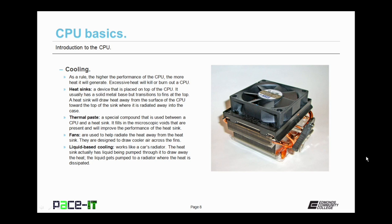To help improve the efficiency of the heat sink, we use thermal paste. It's a special compound that is used between the CPU and the heat sink. It fills in the microscopic voids that are present and will improve the connection between the heat sink and the CPU, thus improving the heat sink's performance.